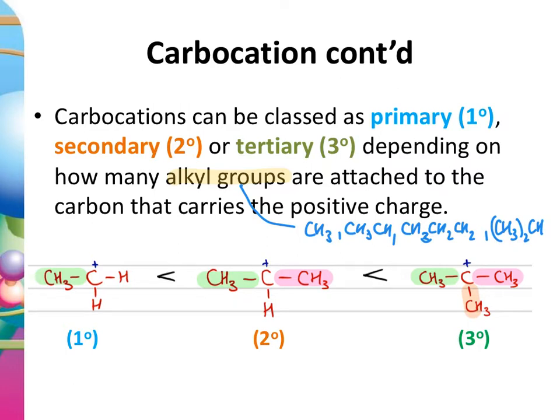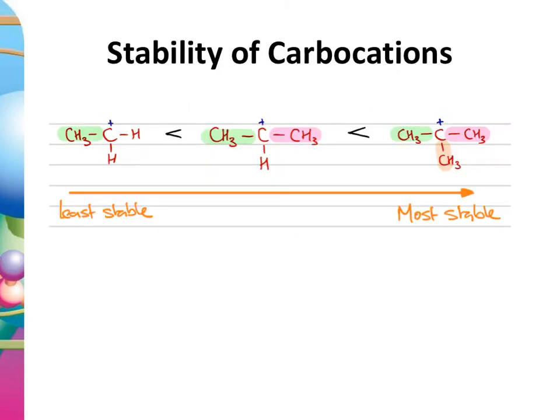Knowing whether a carbocation is primary, secondary, or tertiary gives us a relative measure of their stability. A primary carbocation is less stable than a secondary carbocation, which is less stable than a tertiary carbocation.